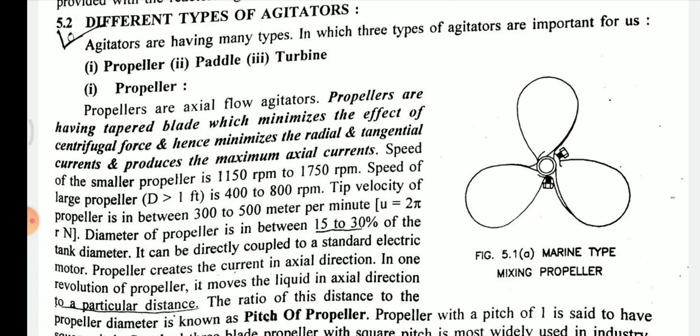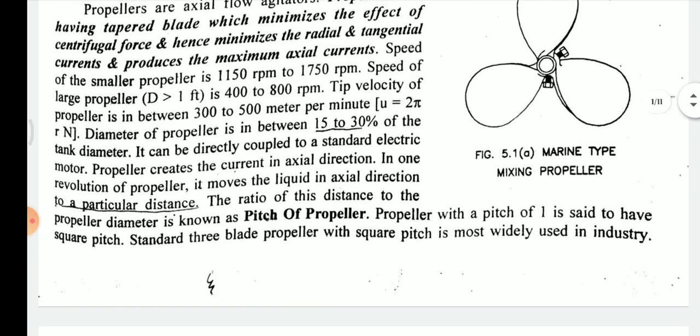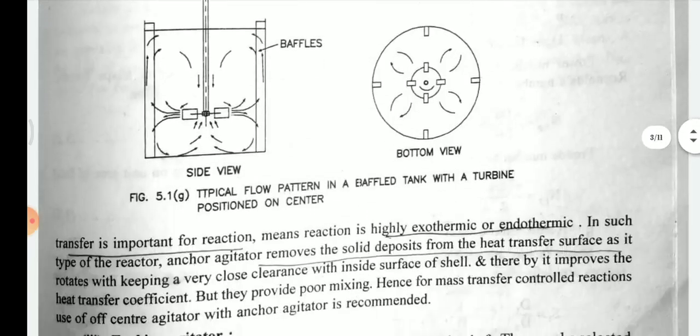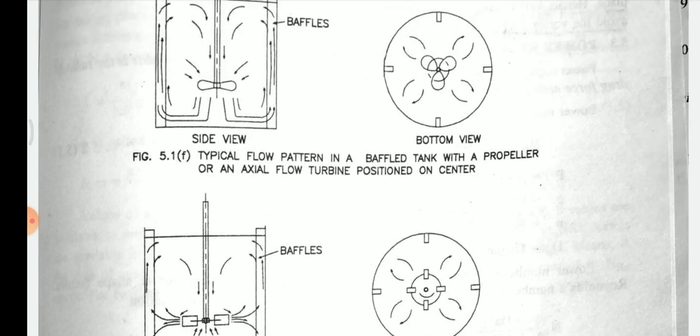These agitator types differ in their flow patterns. Some of them are axial flow impellers and some are radial flow impellers. We also looked at the different flow patterns in baffled tanks and unbaffled tanks.